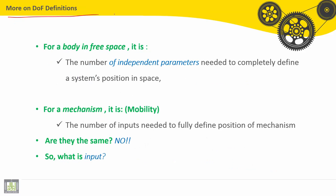More definitions for degree of freedom. For a body in free space, it is the number of independent parameters needed to completely define a system's position in space. For a mechanism, it is called mobility. It is the number of inputs needed to fully define a position of mechanism. Are they the same? No, definitely.